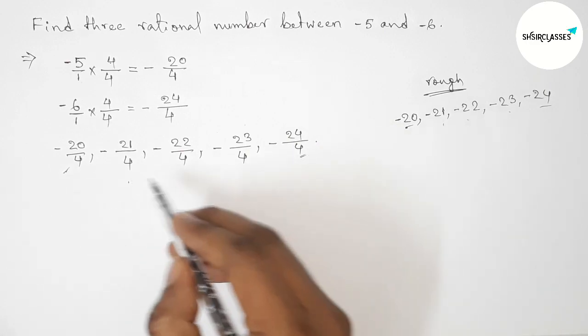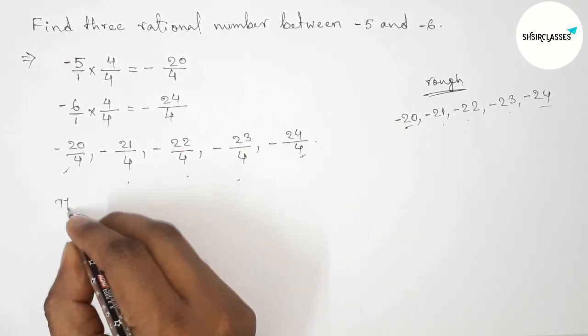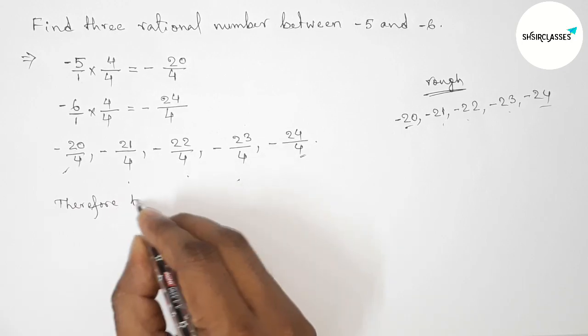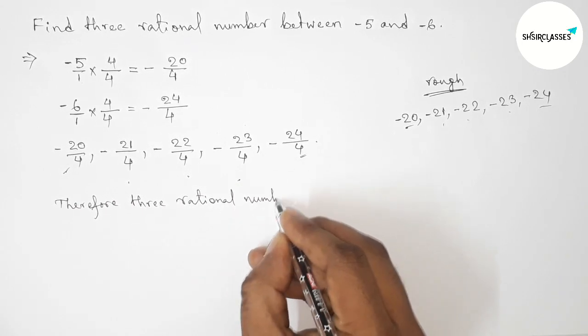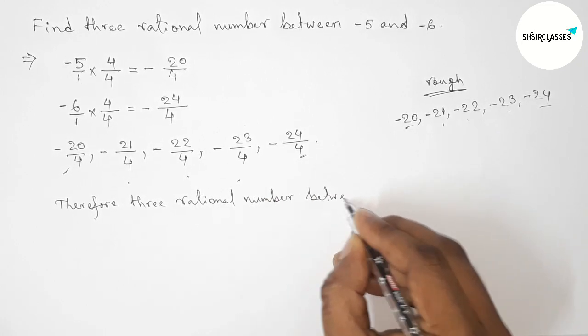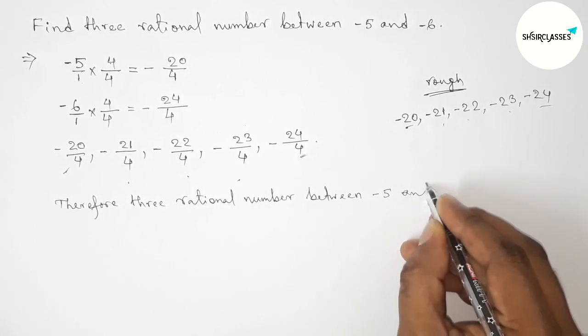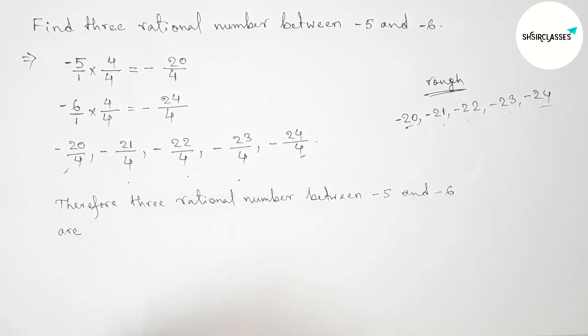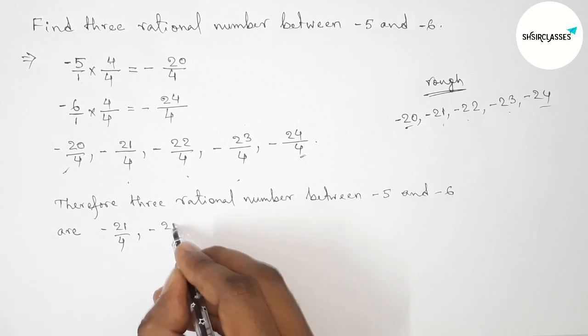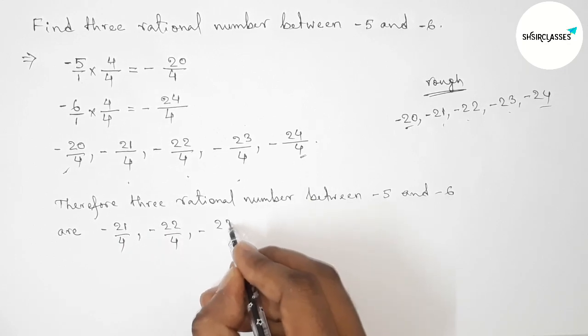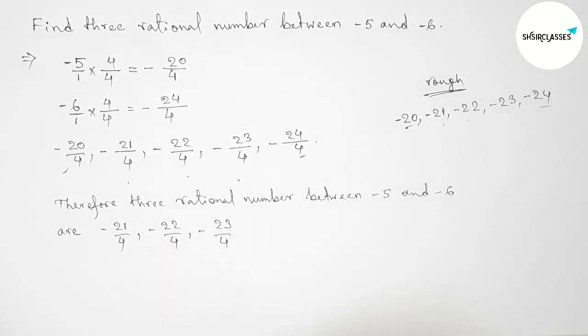Between these, these three are the three required rational numbers. Therefore the required three rational numbers between minus 5 and minus 6 are: minus 21 by 4, then minus 22 by 4, then minus 23 by 4.